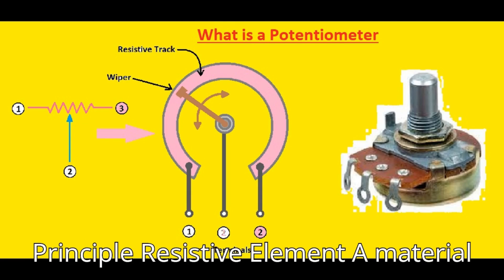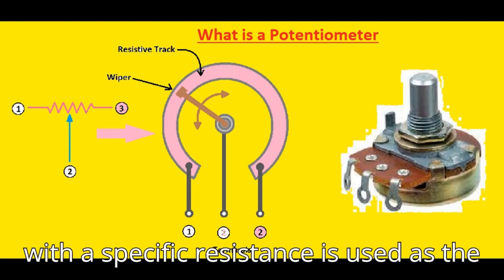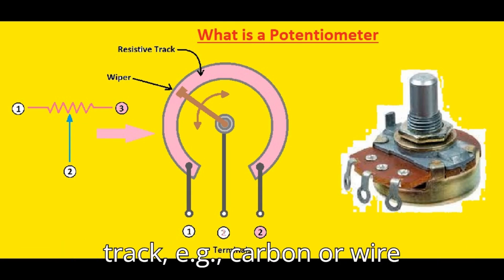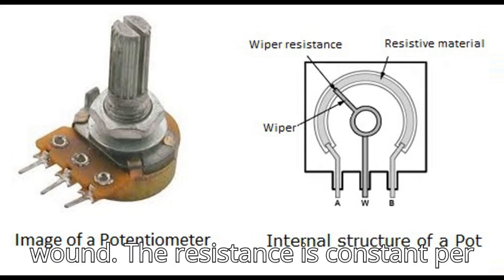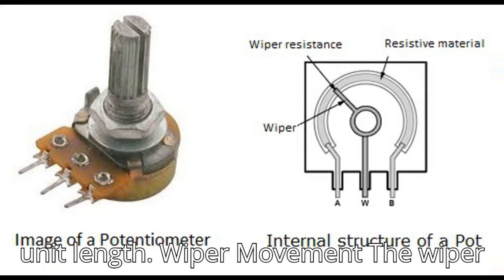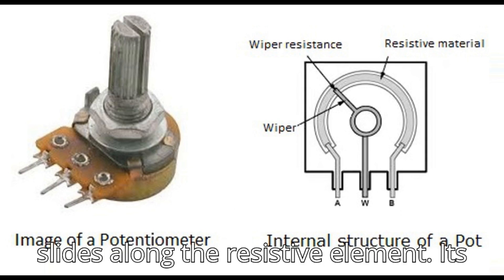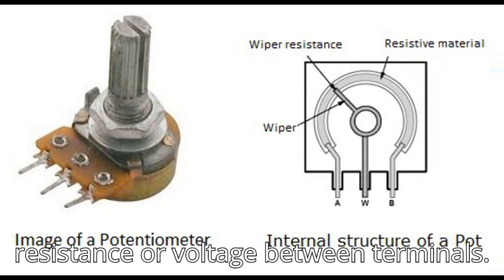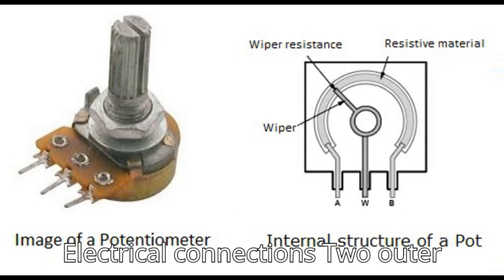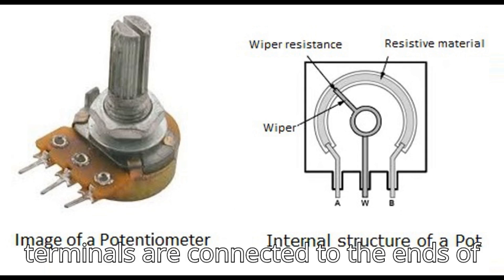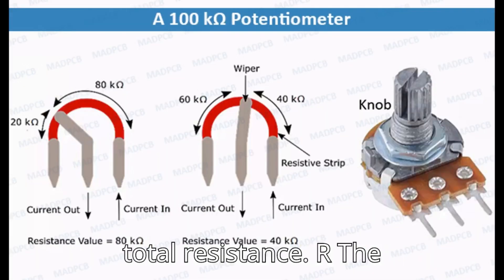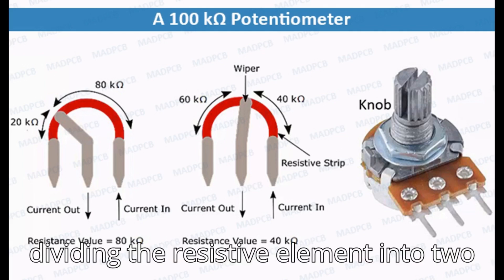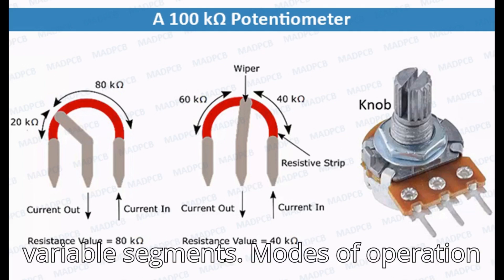Working principle: the resistive element uses a material with a specific resistance as the track, such as carbon or wire wound, and the resistance is constant per unit length. The wiper slides along the resistive element, and its position determines the effective resistance or voltage between terminals. Two outer terminals connect to the ends of the resistive element representing total resistance, while the middle terminal connects to the wiper, dividing the element into two variable segments.